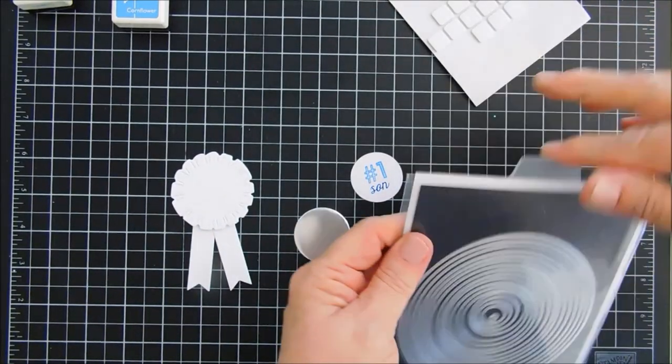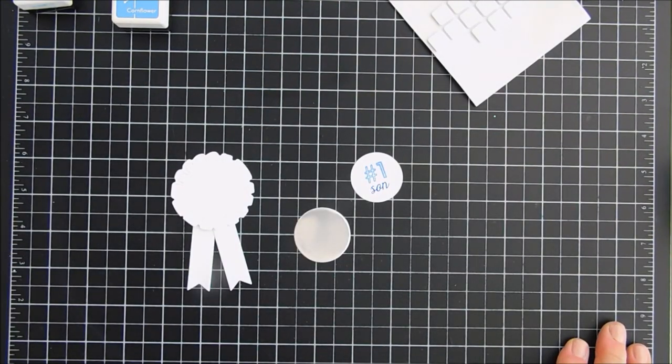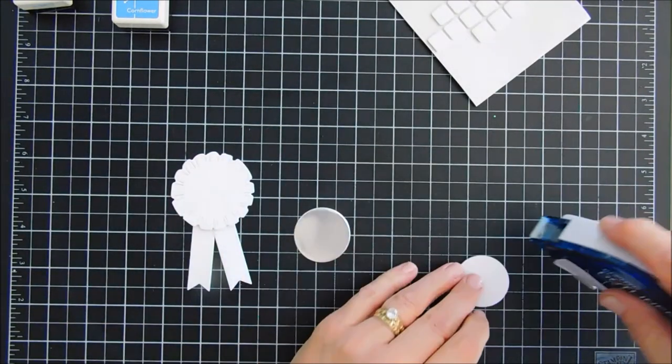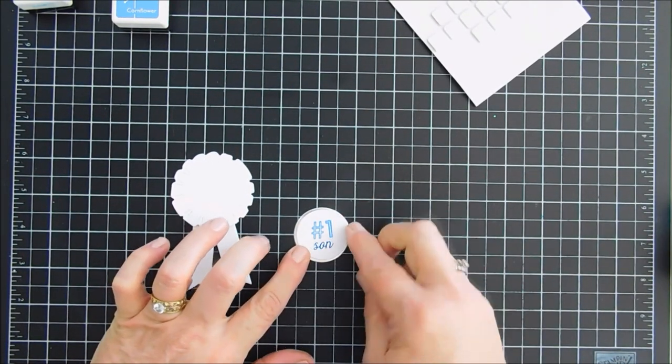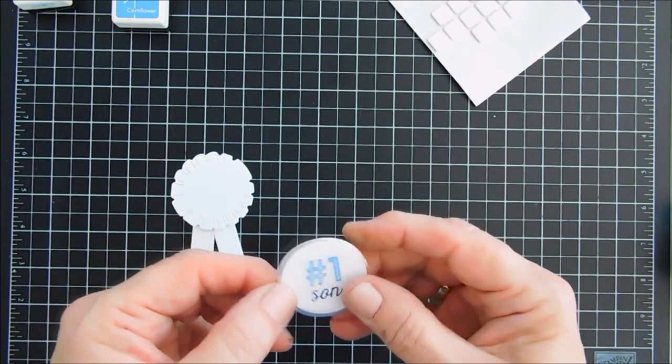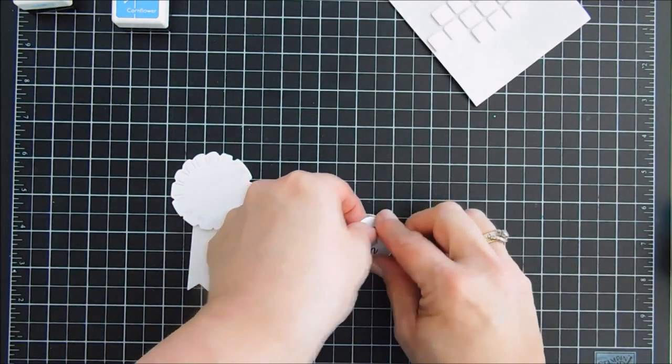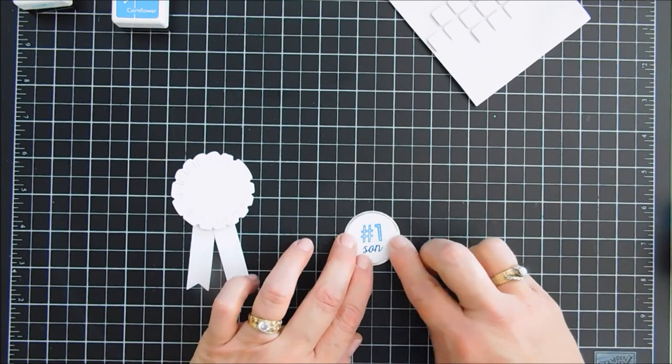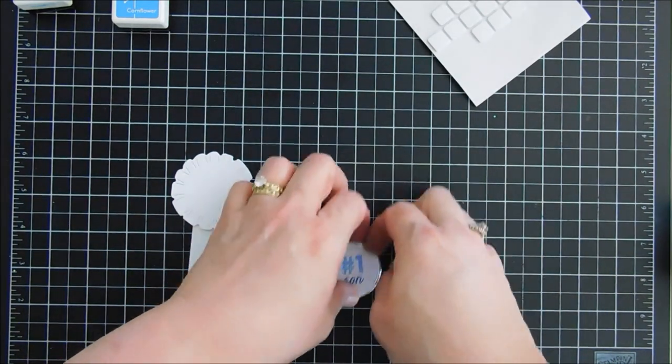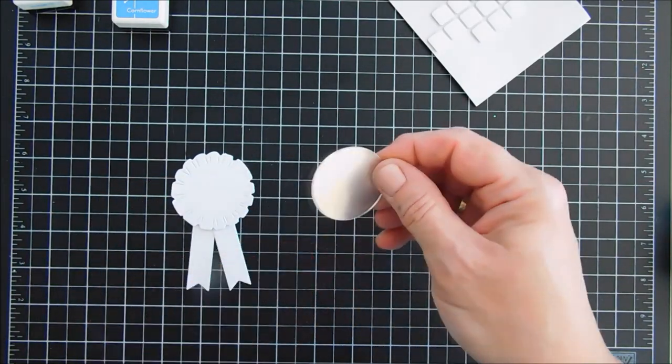We're just going to directly adhere it, so I'll grab my tape runner, add some tape behind it, and put these two together. It's just going to leave a little silver ring. It's going to add a splash of shine and it's also going to give it a real finished look. Now if you don't have silver mirror, you could actually use colored cardstock if you want.